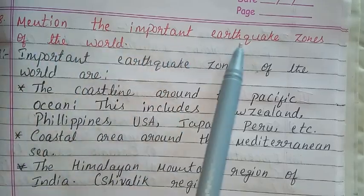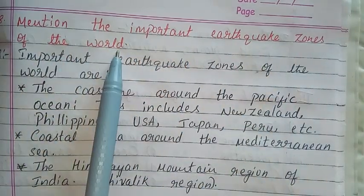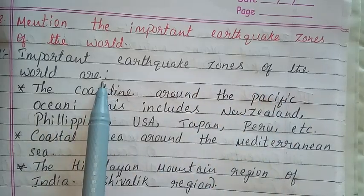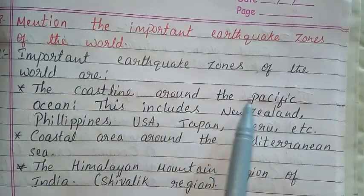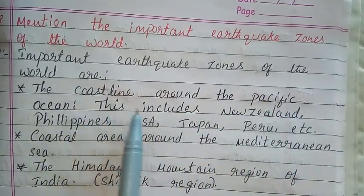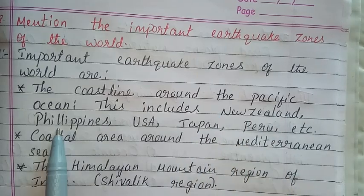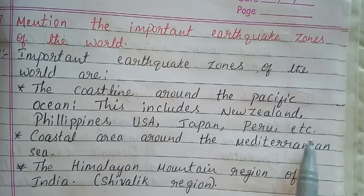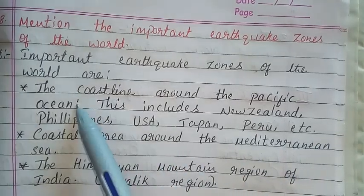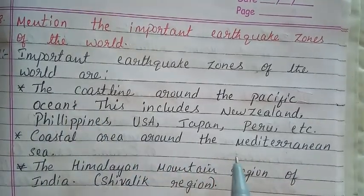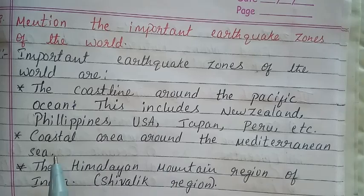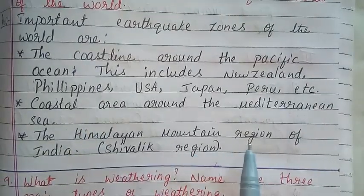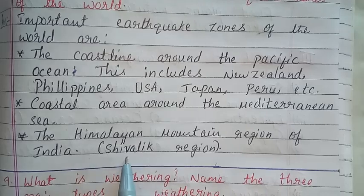Question 8: Mention the important earthquake zones of the world. Answer: The important earthquake zones of the world are: the coastline around the Pacific Ocean — this includes New Zealand, Philippines, USA, Japan, Peru, etc.; coastal areas around the Mediterranean Sea; and the Himalayan mountain region of India, including the Shivalik region.